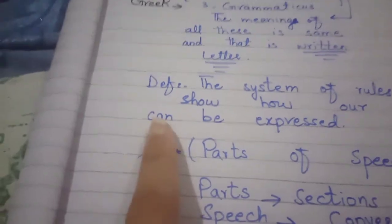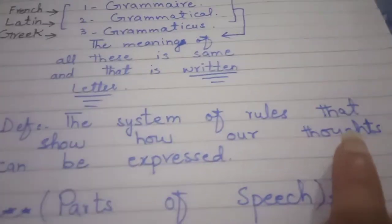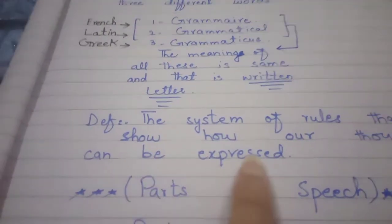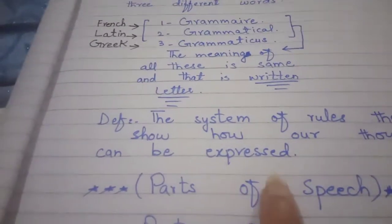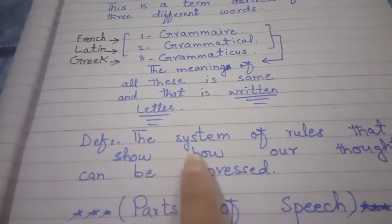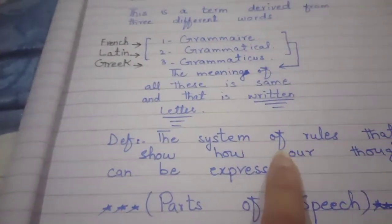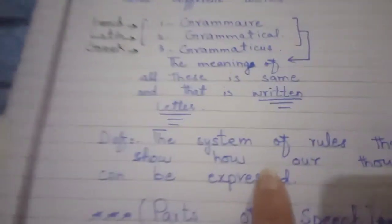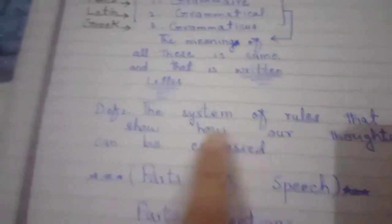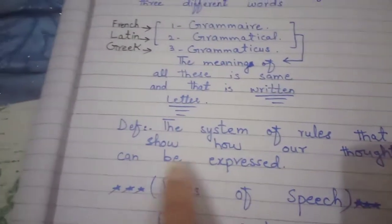Look at the definition: it is the system of rules that show how our thoughts can be expressed. The rules and regulations which we have to know about grammar show how our thoughts can be expressed.